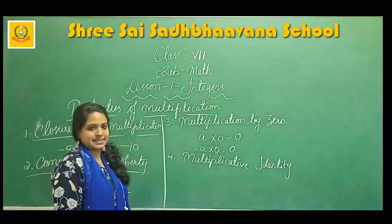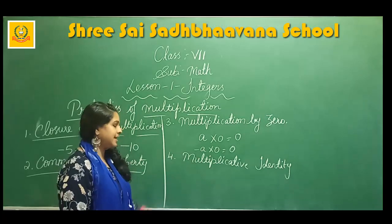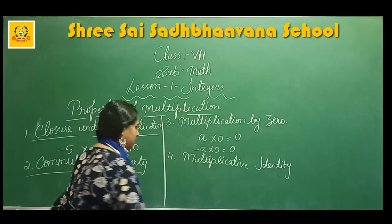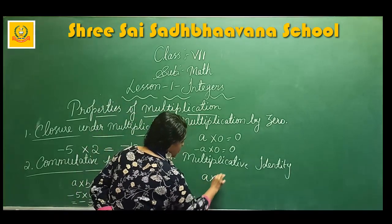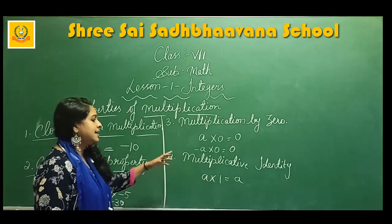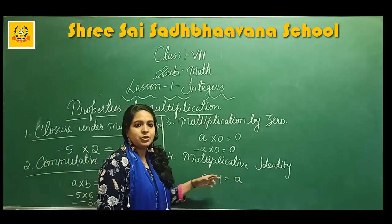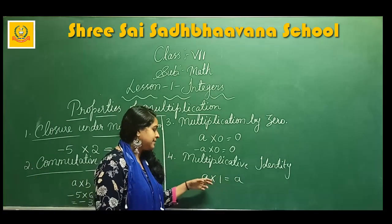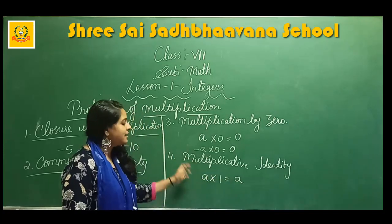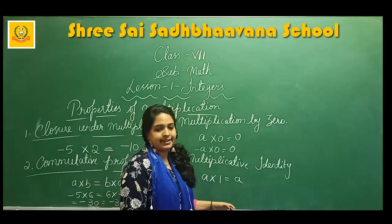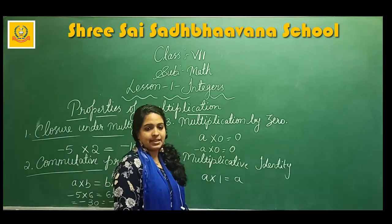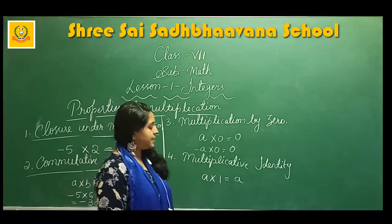The fourth property is multiplicative identity. This property says that when you are multiplying any integer by one, you will get the same integer as the answer. Example: a into 1 is equal to a. When you multiply any integer by one you get the same answer — this property is known as multiplicative identity.